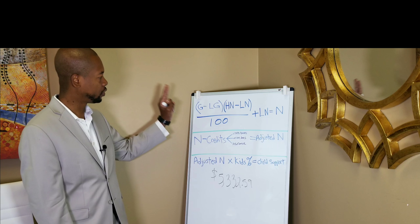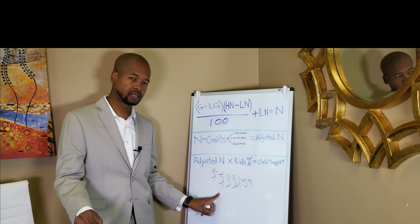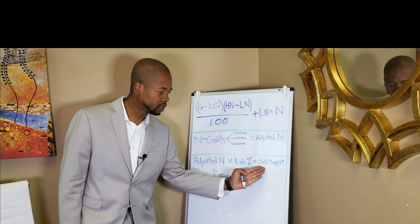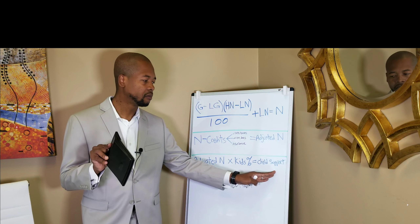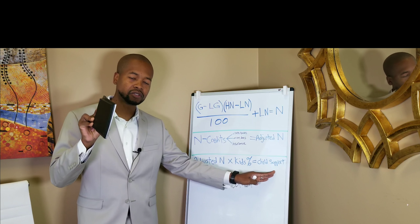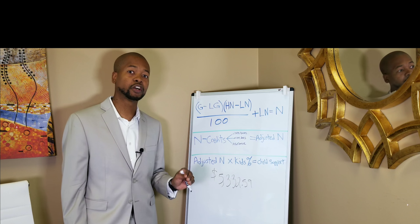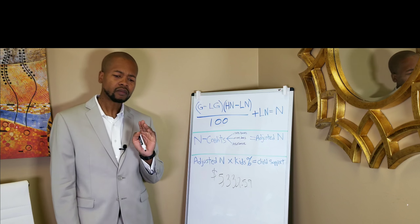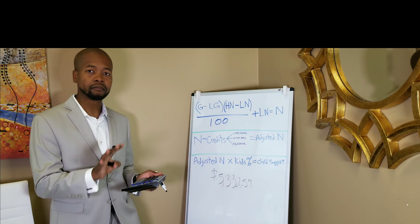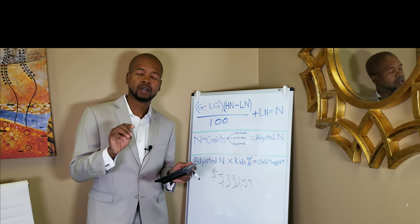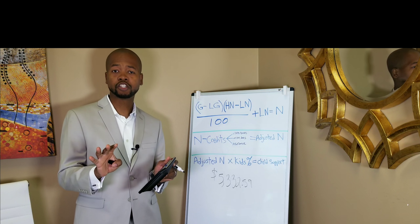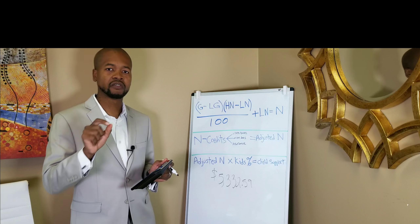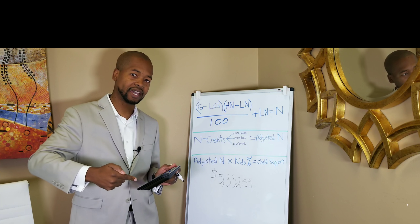So we can go from the gross income of $5,332.59 and get to the accurate monthly guideline child support down to the penny, as long as we use the correct tax chart information and the correct percentage. Now I'm going to do this example on the board manually, but first I'll show you the tax chart I'm going to be using — so please stay tuned for this quick explanation of the tax chart, and then I'll be right back to do the calculations.